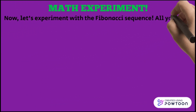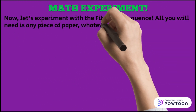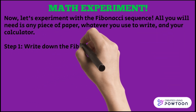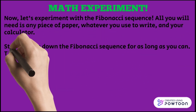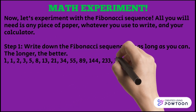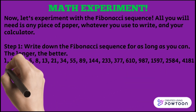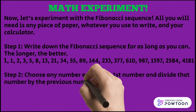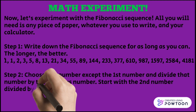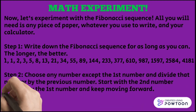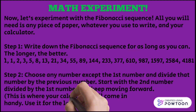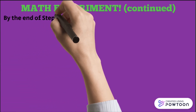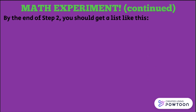Now let's experiment with the Fibonacci sequence. All you will need is any piece of paper, something to write with, and your calculator. Step 1: write down the Fibonacci sequence for as long as you can — the longer, the better. Step 2: choose any number except the first number and divide that number by the previous number. Start with the second number divided by the first number and keep moving forward. Use your calculator for the later pairs. You should get a list like this.